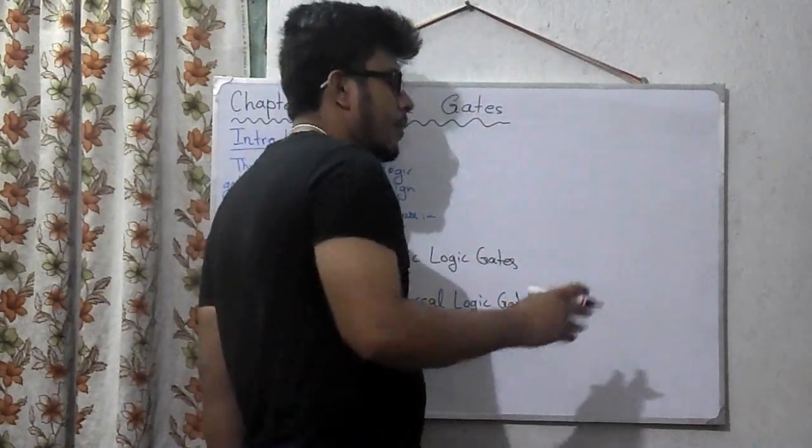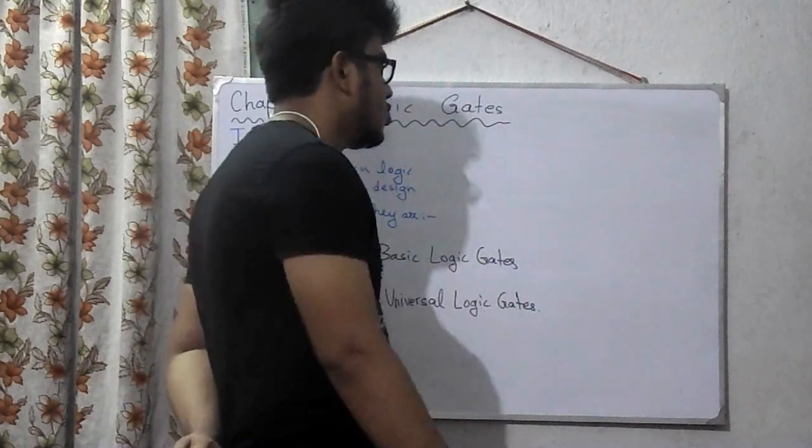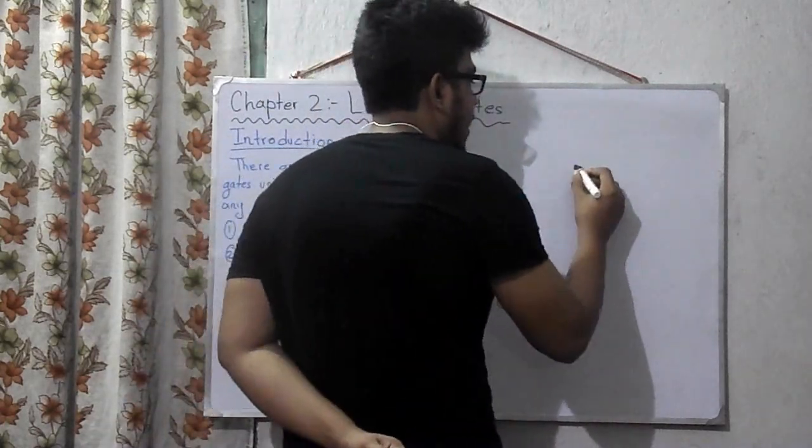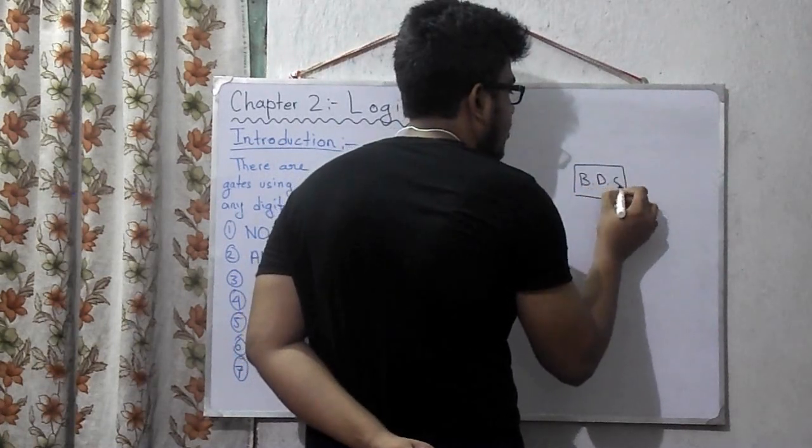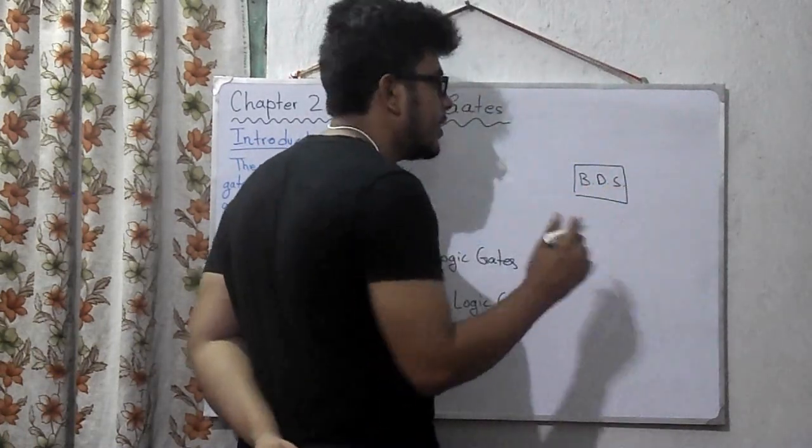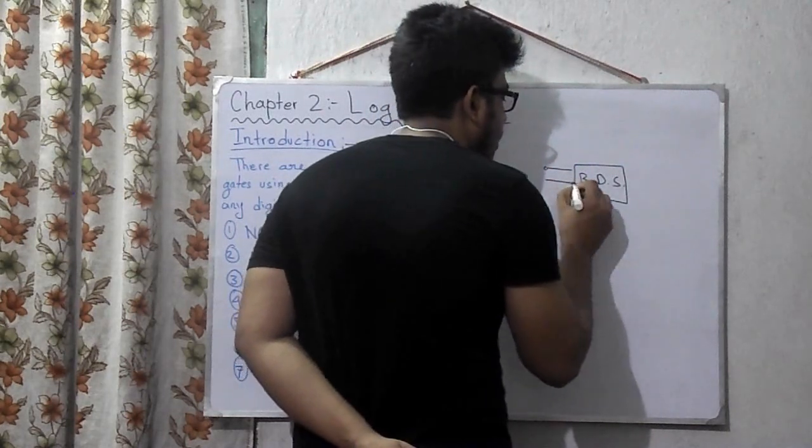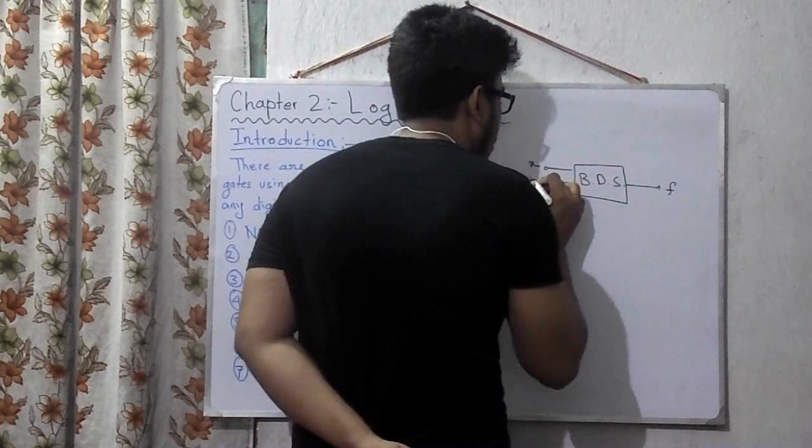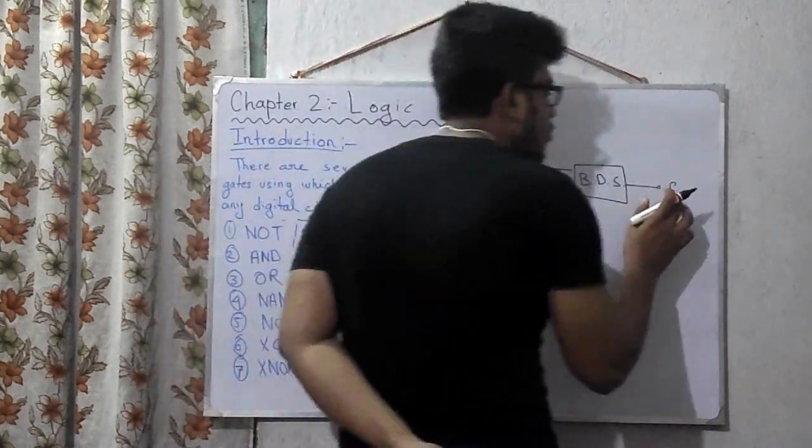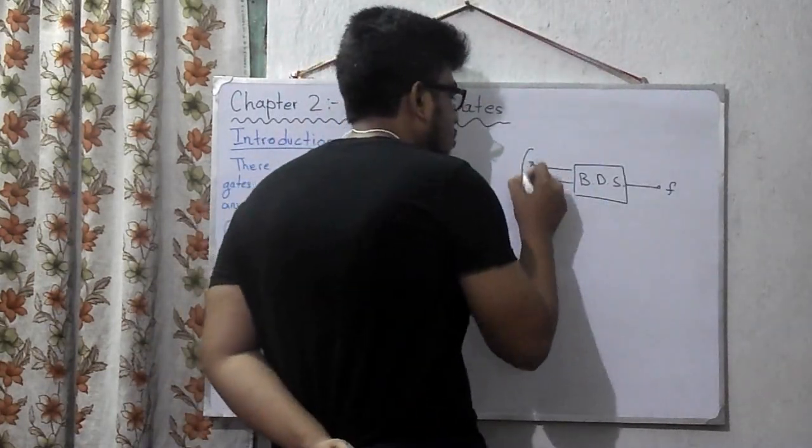We have seen the binary digital system. We have a black box something like this which is BDS - Binary Digital System - and it had an input side and an output side.